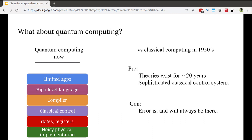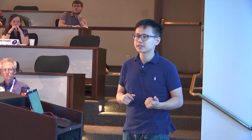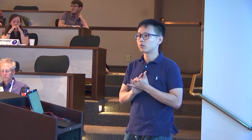The quantum computing software stack looks very similar to what we have in classical computing. We have applications, higher-level languages — for example IBM and Google have their own software packages like Qiskit and Cirq. We have compilers, classical control, and the abstraction of gates and registers, down to very noisy physical implementations. However, the biggest disadvantage is that the qubits we're building now are much less reliable than the classical bits in the 1950s, and it's possible we'll never build quantum bits as reliable as the classical bits we have now.